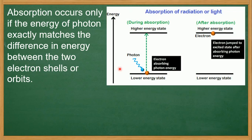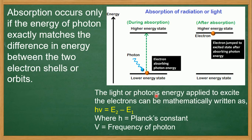Absorption occurs only if the energy of a photon exactly matches the difference in energy between two electron shells or orbits. The absorption event is very important — only when the photon energy equals the energy difference between the two levels will absorption occur. The light or photon energy applied to excite the electrons can be mathematically written as hν = E2 − E1, where hν is the energy of a photon, ν is the frequency of radiation, and h is Planck's constant.